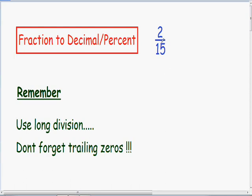Once again here we have the fraction 2 over 15. And in order to change this into a decimal we need to use long division. So the fraction 2 over 15 is exactly the same as 2 on the inside being divided by 15 on the outside.